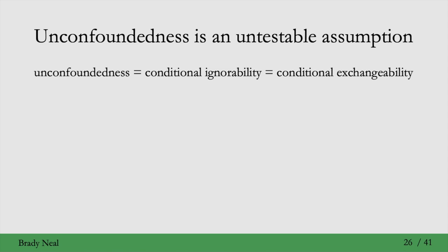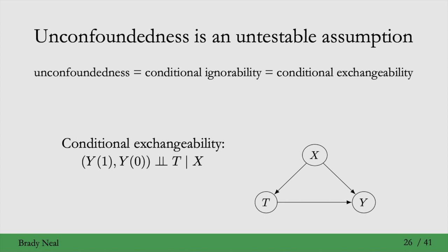An important thing to highlight about unconfoundedness is that in general it is an untestable assumption. In a graph where we condition on X, we get conditional exchangeability. But what if there is some unobserved W that is also a confounder of the effect of T on Y? Then we don't have conditional exchangeability given X alone. In general, we never know if there are unobserved confounders, which is why unconfoundedness is an untestable assumption.